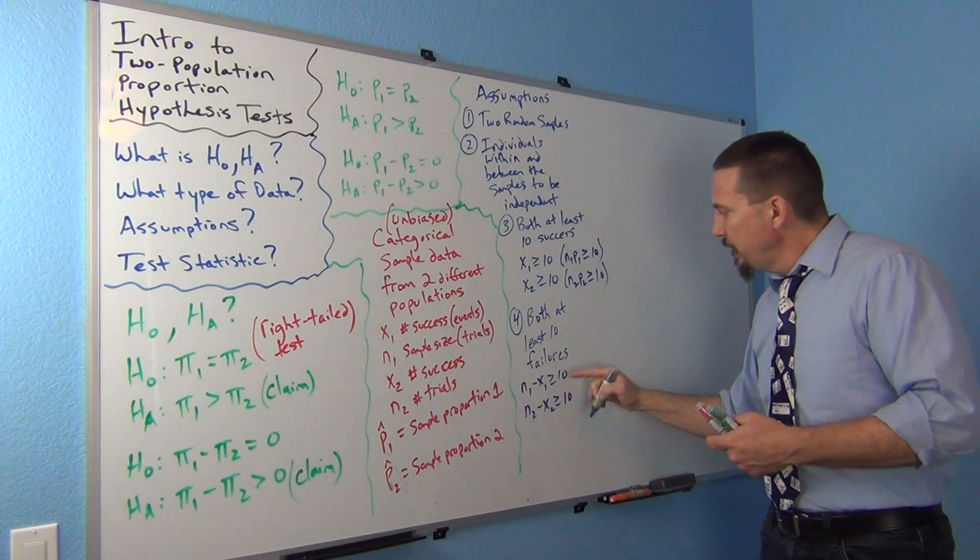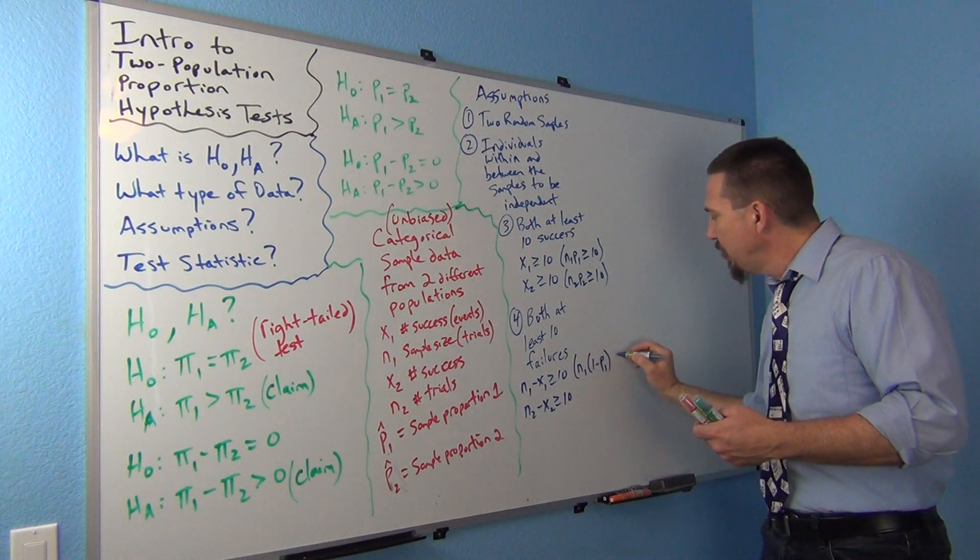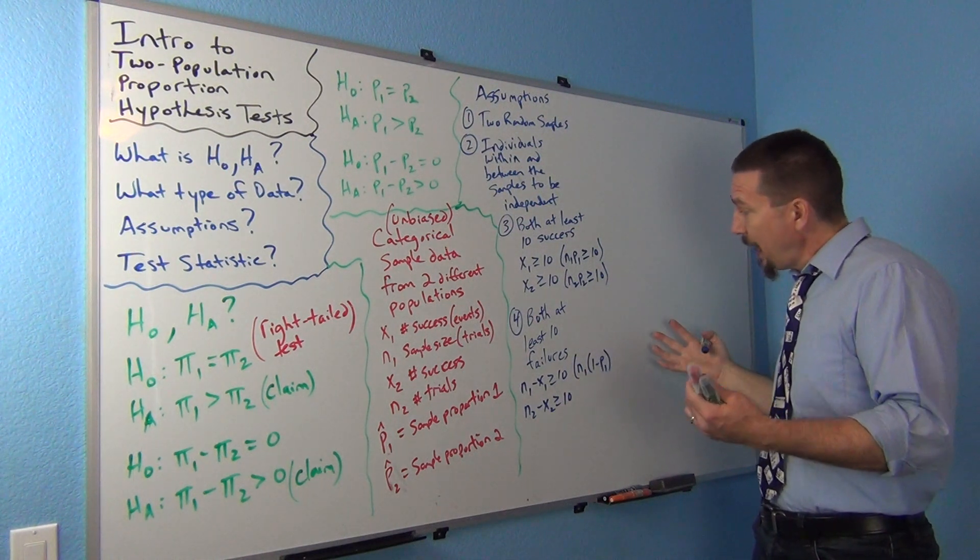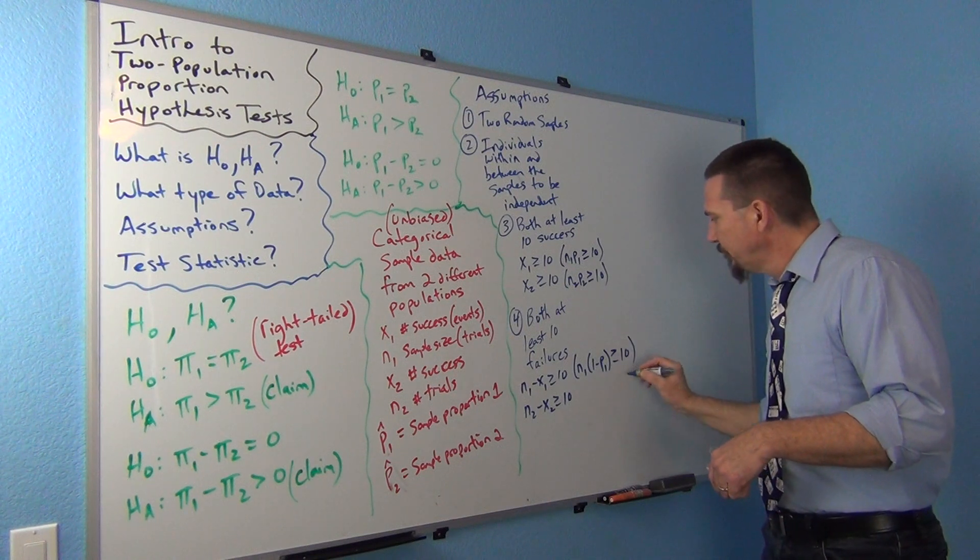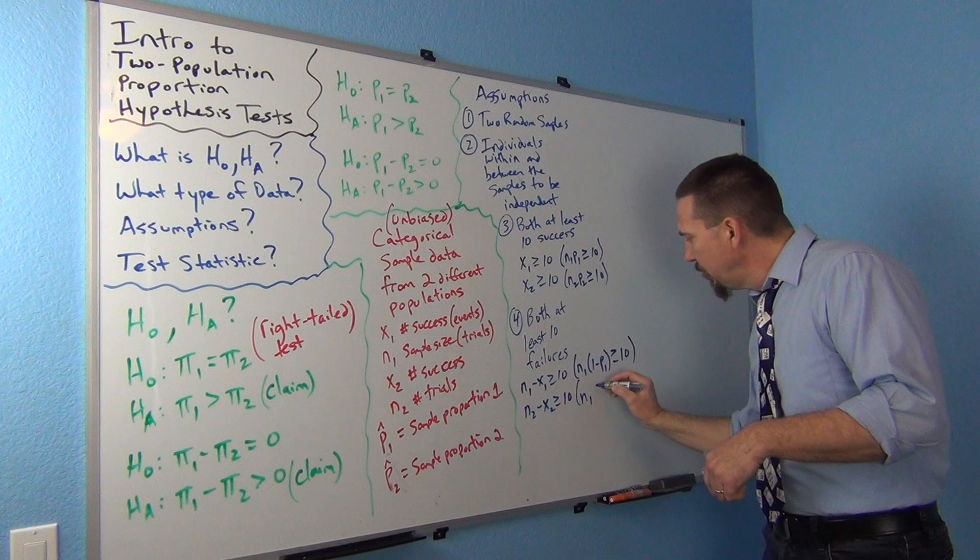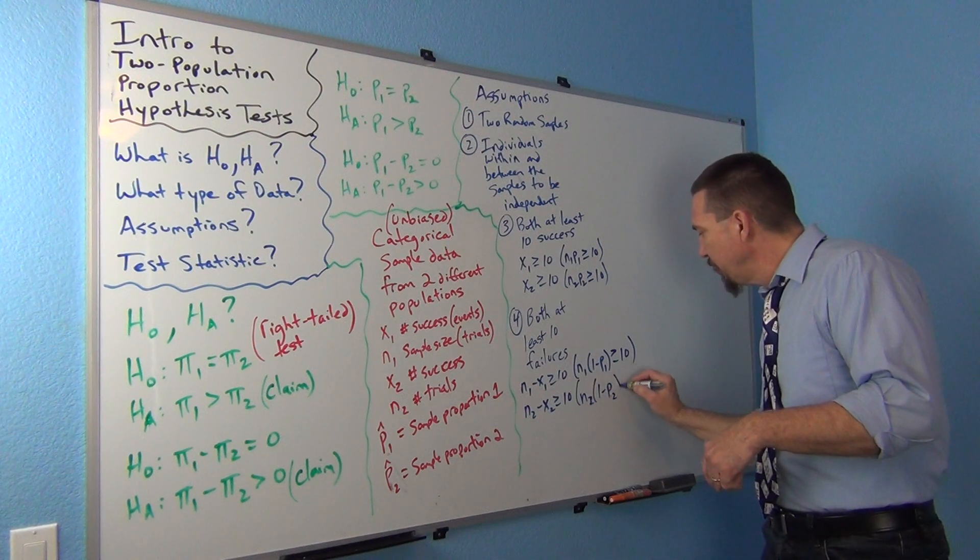Or this one, the failure: sometimes you'll see it as n1 times (1 minus p1), or (1 minus π1), is greater than or equal to ten, and n2 times (1 minus p2) is greater than or equal to ten.